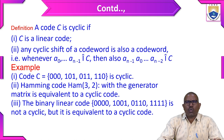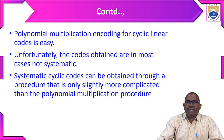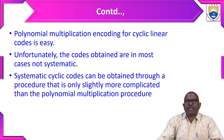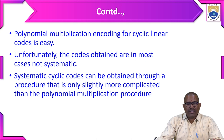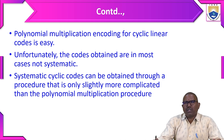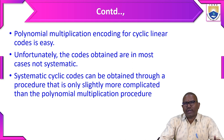As an example, code C containing {000, 101, 011, 111, 110} is cyclic. Polynomial multiplication encoding for cyclic linear codes is easy, but unfortunately the codes obtained are in most cases not systematic. The difference between systematic and non-systematic is where the message bits are located. In block codes there are k message bits and n minus k parity bits — similarly here we are going to add parity bits.